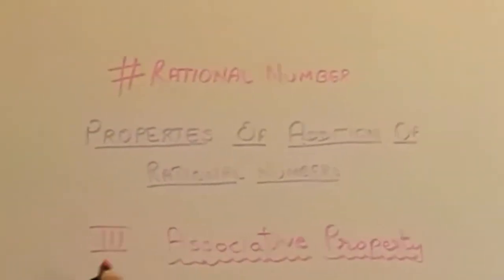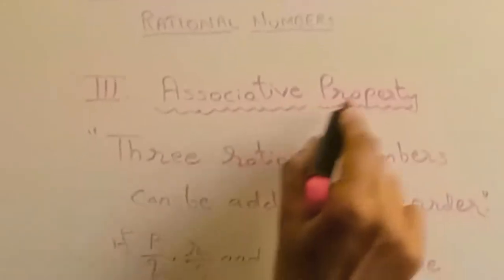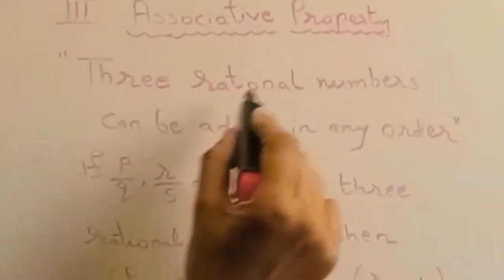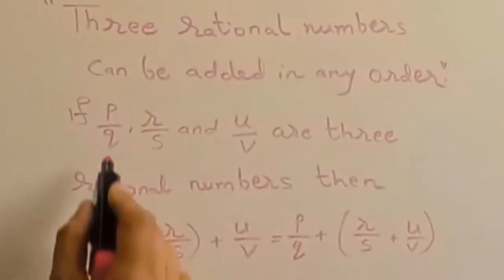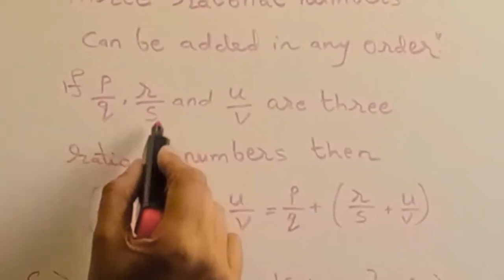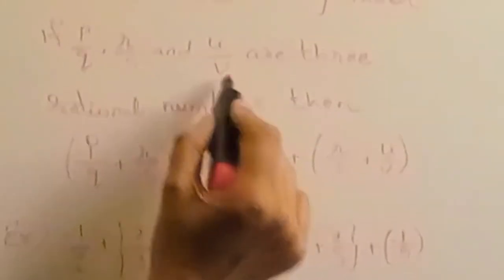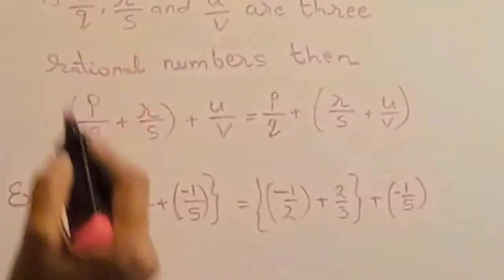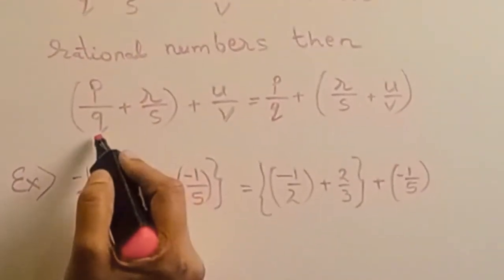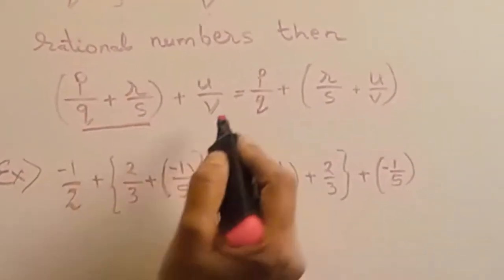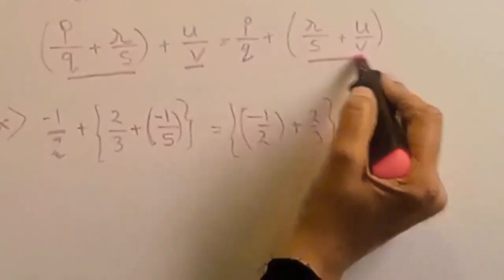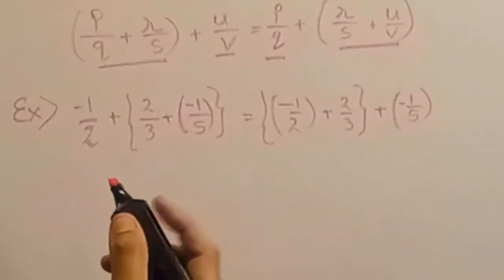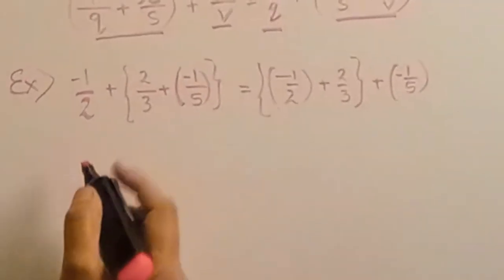So you can see that the left hand side and the right hand side are equal — this confirms the commutative property. Third property is associative property. Three numbers can be added in any order. If p by q, r by s, and u by v are three rational numbers, you can add them in any order — add the first two terms first, then the third, or the last two first, then the first.